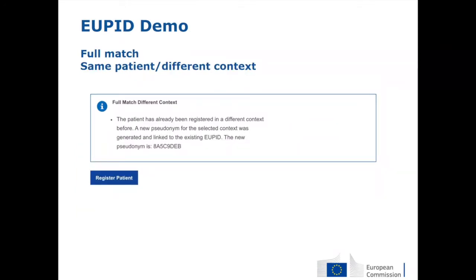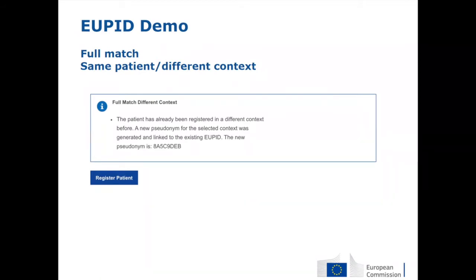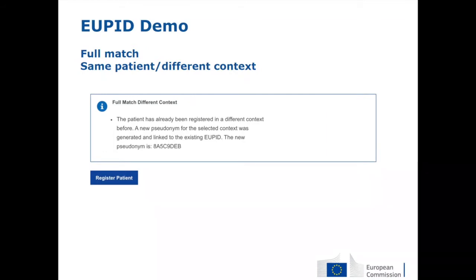If a patient has already been registered in a different context by a different registry, UPIT provides context-specific pseudonyms — so a new, different pseudonym is generated — along with an informational message indicating that this patient has already been registered in a different context.